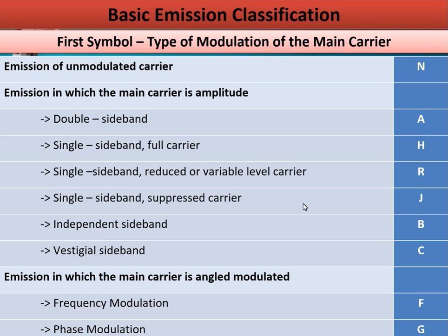When talking about the representation of types of modulation, they are designated using a three-symbol notation. The first symbol is based on the type of modulation of the main carrier. Possible letters include N, A, H, R, J, B, C, F, and G. For example, if the main carrier uses frequency modulation, the symbol is F. For double sideband, the symbol is A.